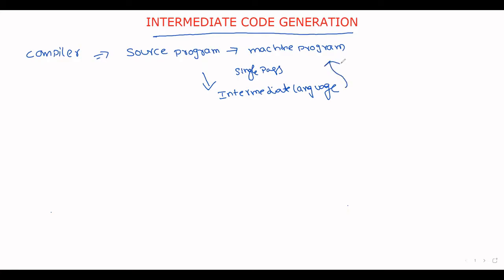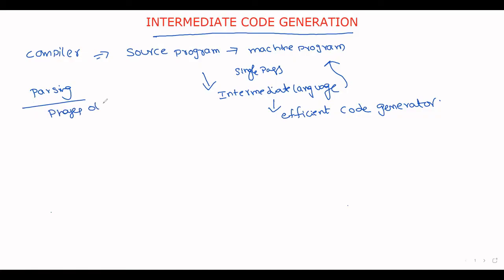From this intermediate language we generate the machine program. The main advantage of intermediate language is that it leads to efficient code generation. To understand this, recall the concept of compiler phases. The phases of a compiler are divided into two types: one is the front end and the second one is the back end.